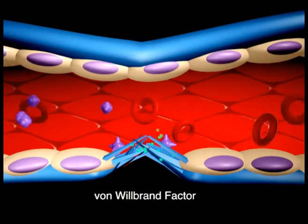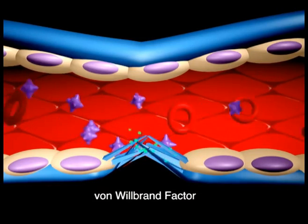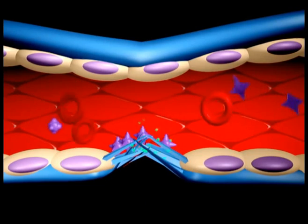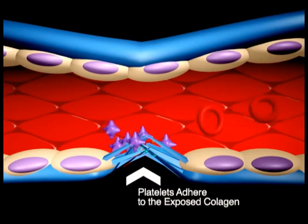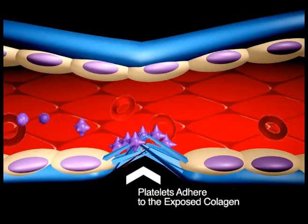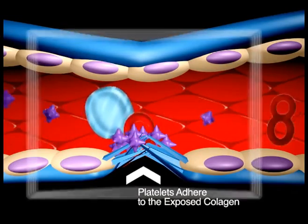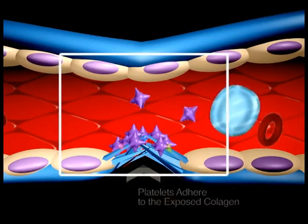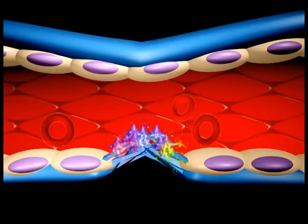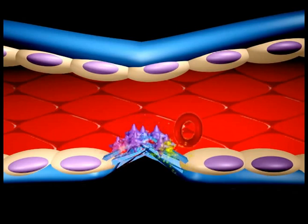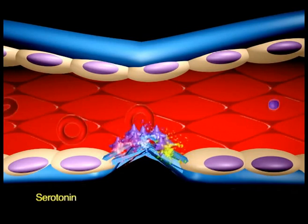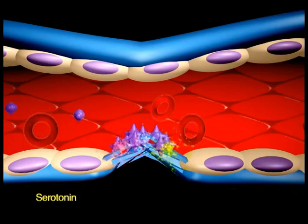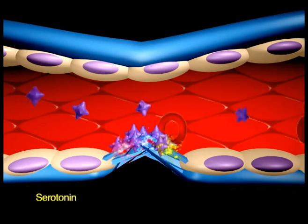Exposed collagen and von Willebrand from the damaged site will promote the platelets to change shape and to adhere. When platelets adhere to the damaged vessel, they undergo degranulation and release cytoplasmic granules, which contains serotonin, a vasoconstrictor, and ADP.